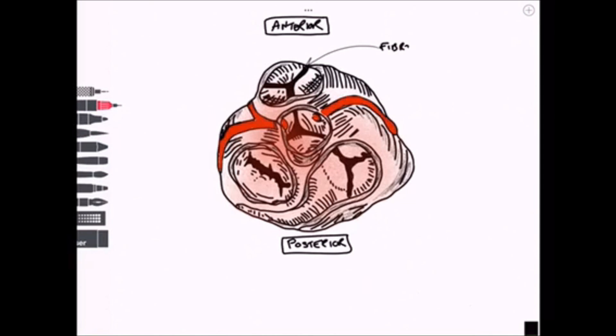So here's our anterior and posterior views. We can see the fibrous ring here of the pulmonary valve which is most anterior in this view.